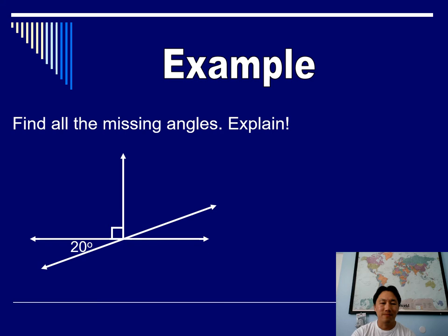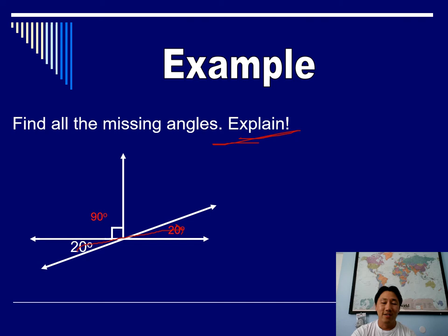Let's do an example. I give you some intersecting lines and one angle that's 20 degrees — find all the other angles. The first one you can find is the one directly across from the 20 degrees. That's the vertical angle, and vertical angles are always equal to each other. Note the angle with the box is 90 degrees, and then the next one is 20 degrees because vertical angles are always equal.